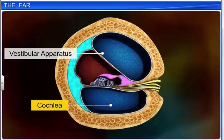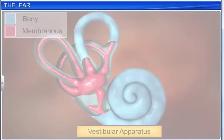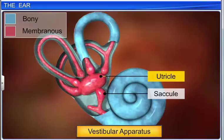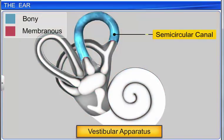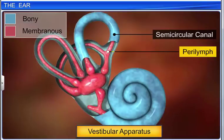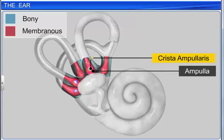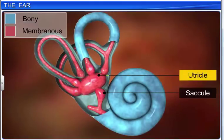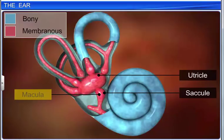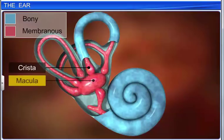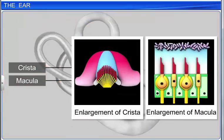The vestibular apparatus is located above the cochlea and consists of three semicircular canals and the otolith organ, which consists of the saccule and utricle. Each semicircular canal is C-shaped, lies at right angles to the other two, and is suspended in the perilymph. The swollen base of these canals is called the ampulla, which contains a sensory spot called the crista ampullaris. The saccule and utricle also contain a sensory spot called the macula. Both crista and macula contain hair cells that act as receptors of the vestibular apparatus and are responsible for maintaining the body's balance and posture.